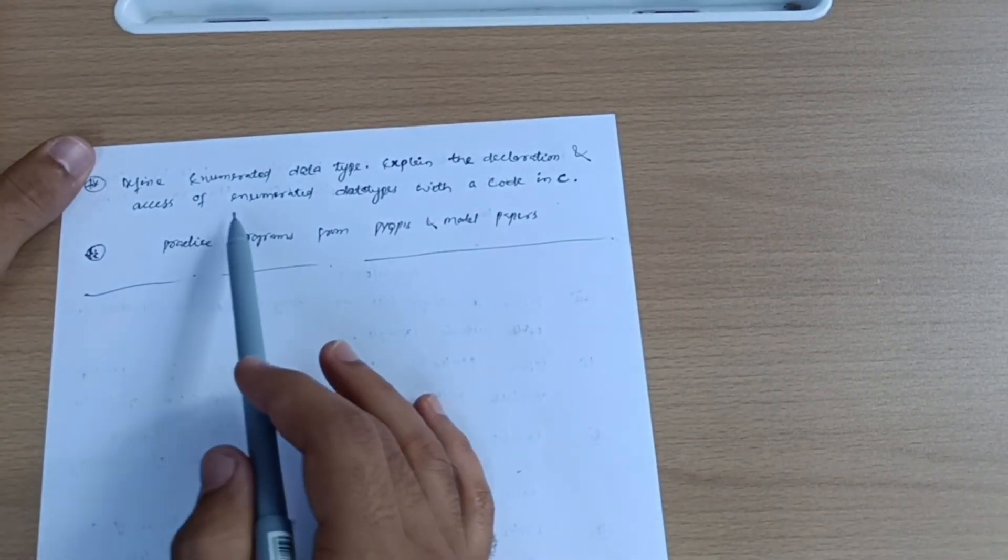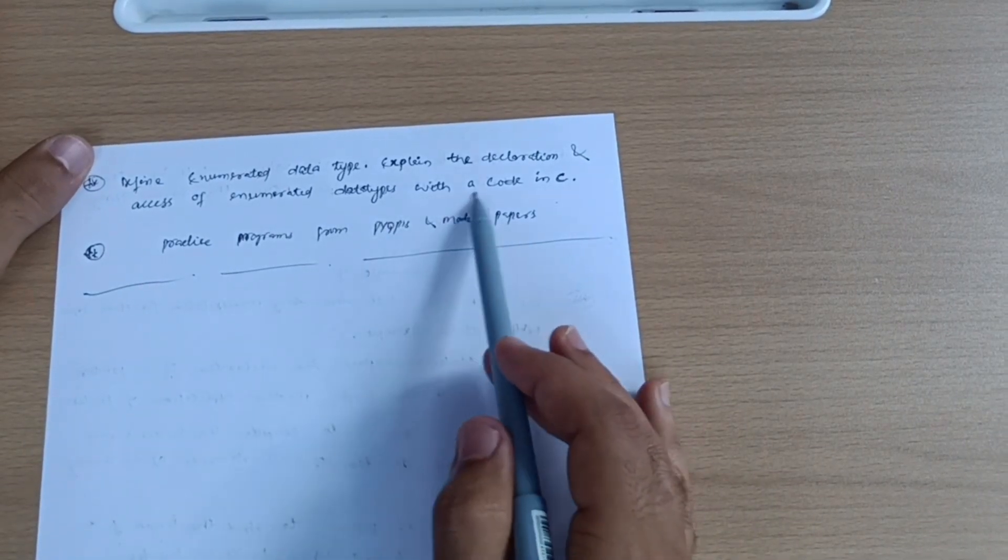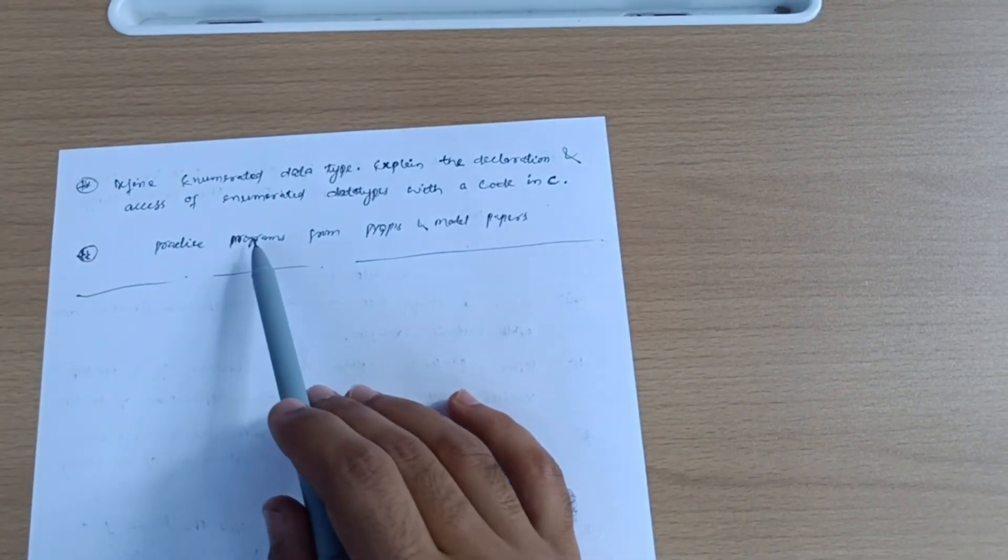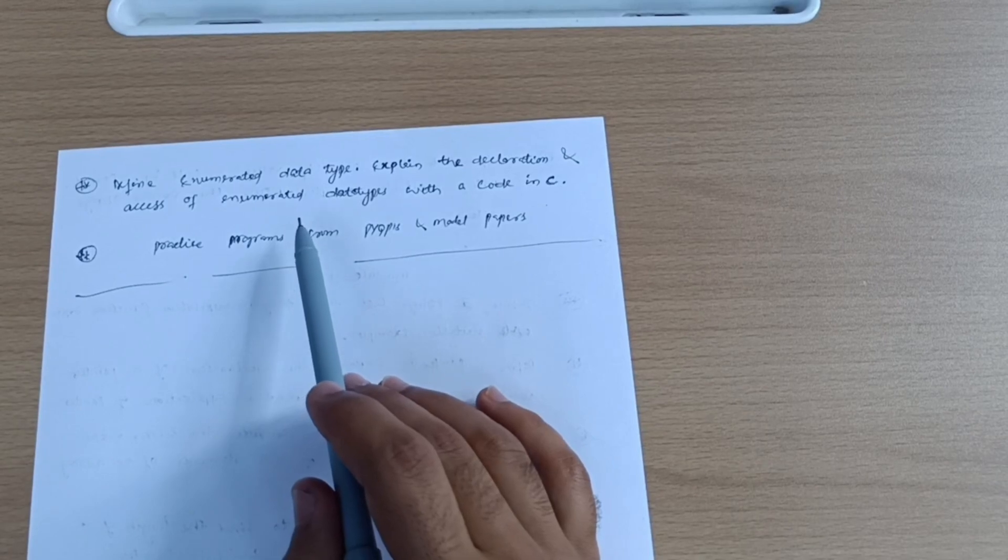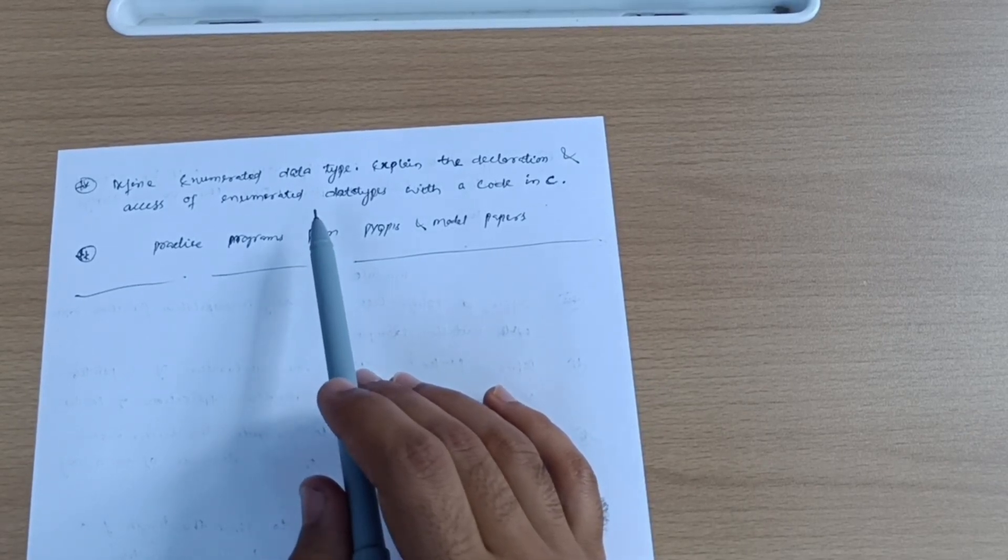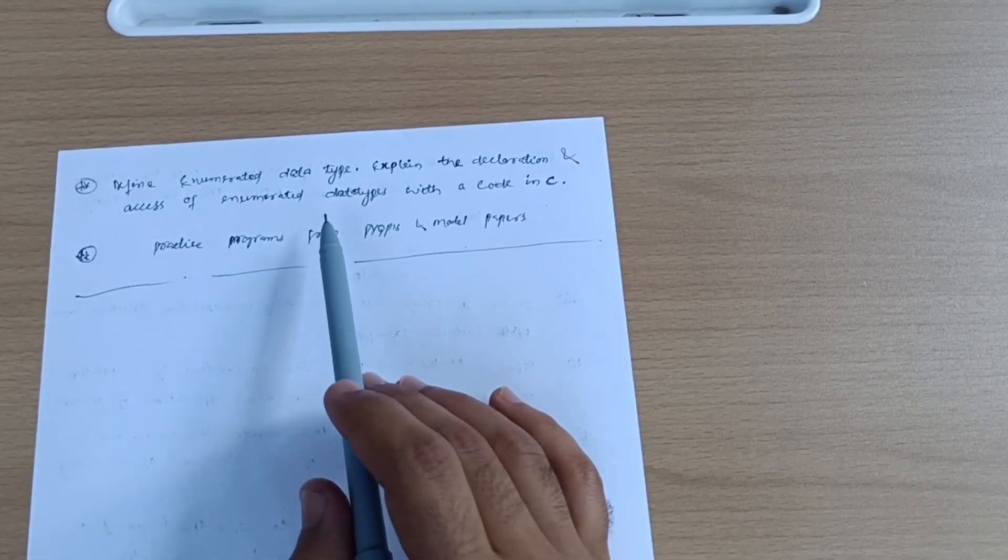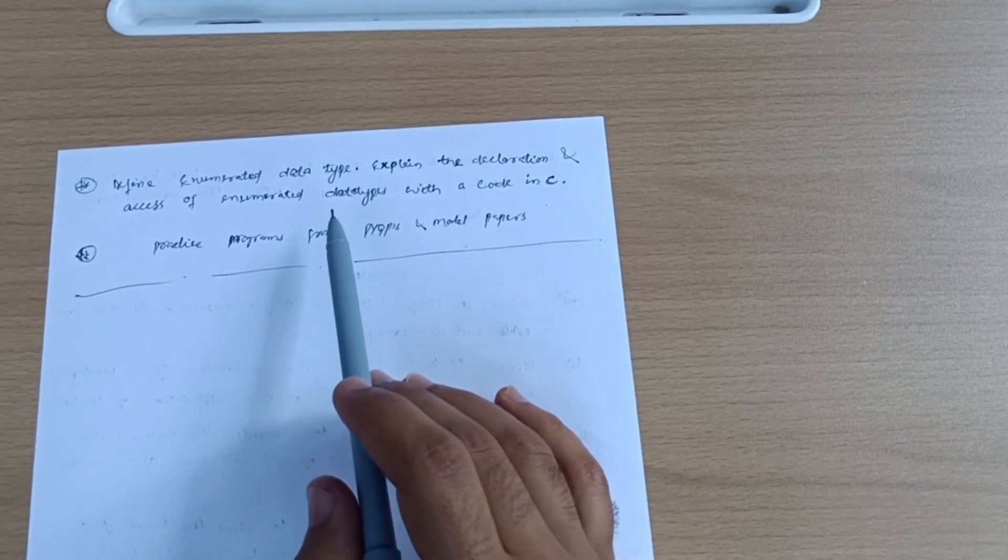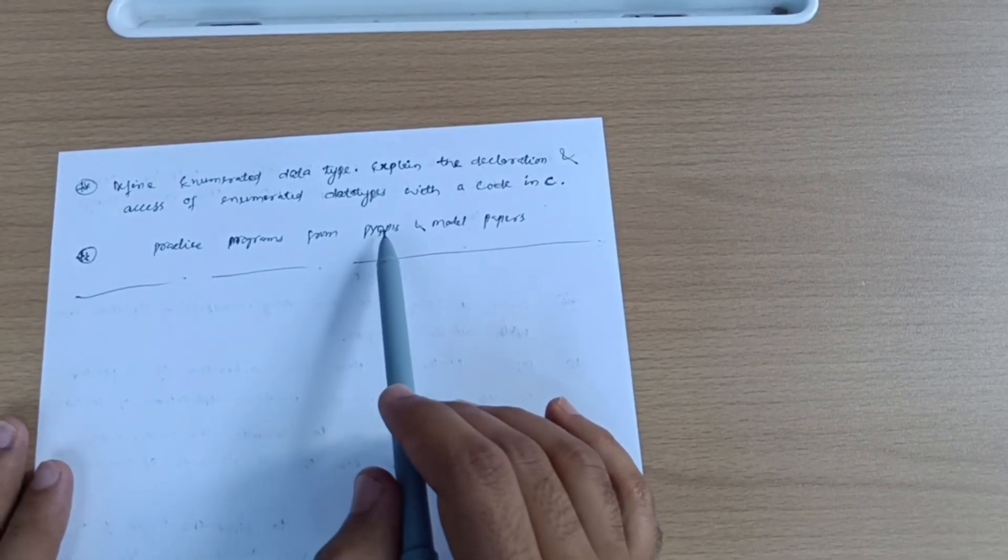List any four file operations in C. Define enumerated data type, explain the declaration and access of enumerated data types with code in C. I have not taken programs here just because in this module you cannot predict the fixed programs. So better to go for previous year question papers which I have uploaded on my Instagram account and also model question papers. You should practice programs from there.